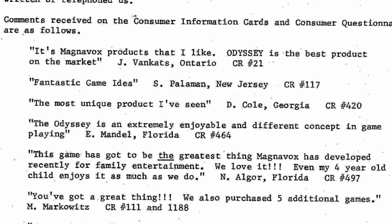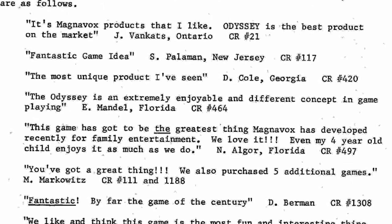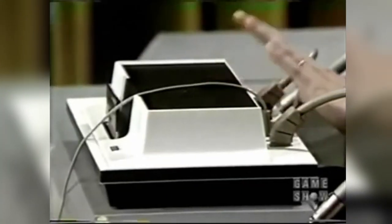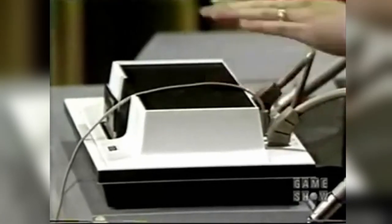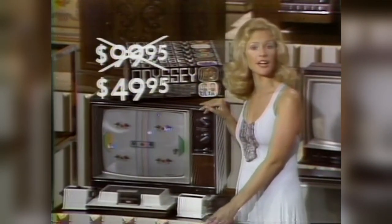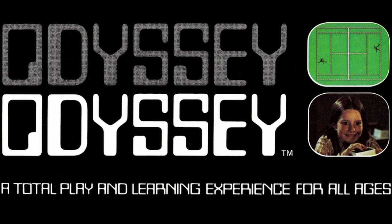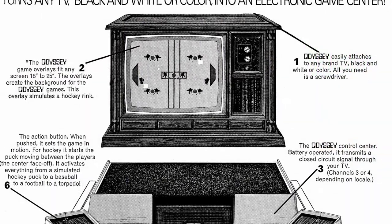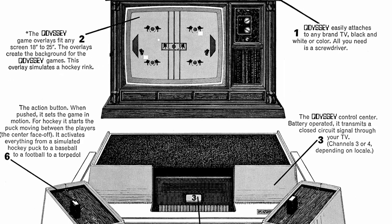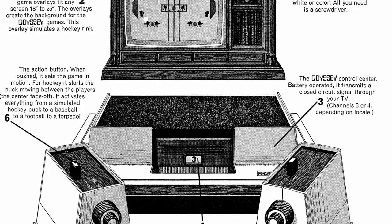Magnavox nearly discontinued the product at that point. But they received positive consumer feedback in the form of a survey card within the box, which netted respondents an additional game, preventing an outright shelving of the product. Aside from a few additional game cards and a promotional price reduction in 1973, no effort was made to position the console as a major product. In all, they sold 350,000 of them over a three-year lifespan — a poor, if not disastrous showing for a new product category.